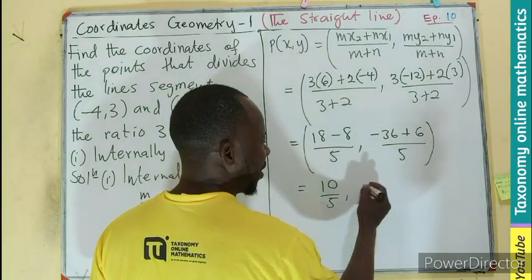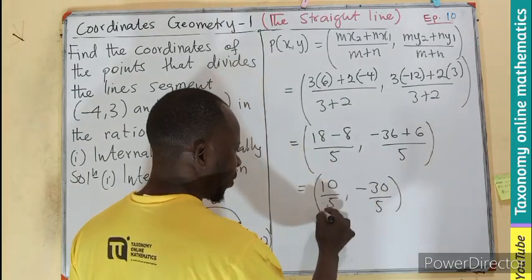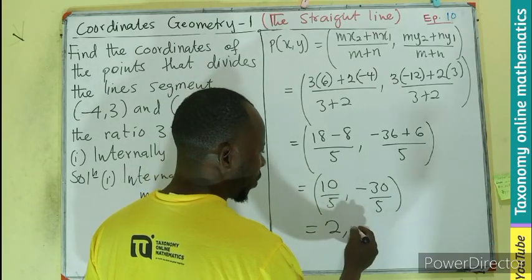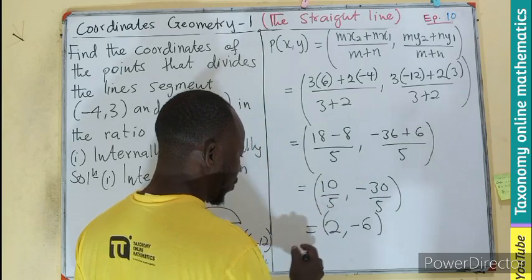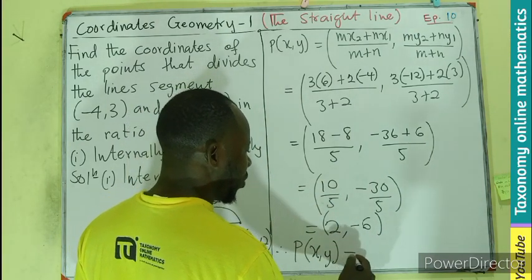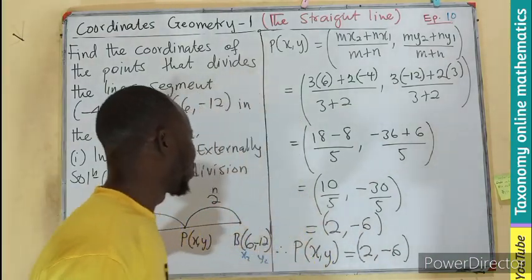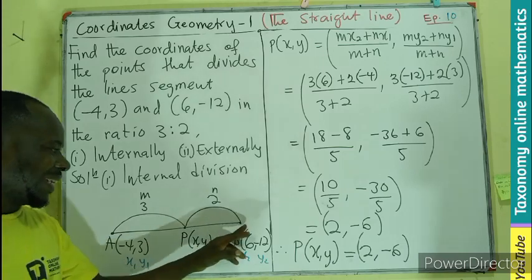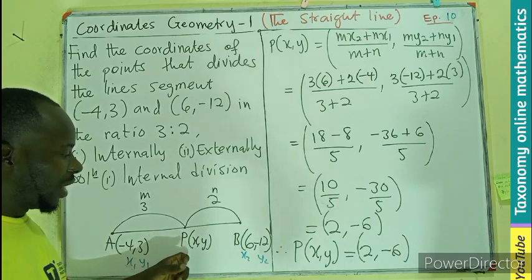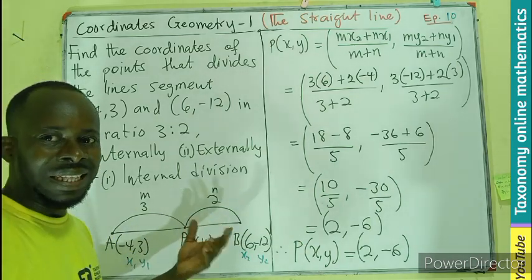I will be having -30 out of 5. So if I further divide, I have 2, -6. So therefore, the coordinate of P(x,y) will be equal to (2, -6). Meaning here, the internal division, the coordinate of the P here, the divisor, is going to be 2 and -6. That is for internal division.